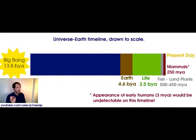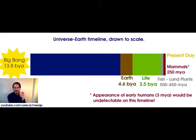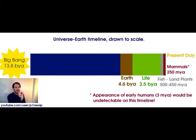That line would be undetectable on this timeline. I could draw it in the thinnest line at the end of the mammal area in red, and no matter what color I chose, you would not be able to detect it — just to give you some visual reference of how infinitesimal the human species has been around in regard to the universe.